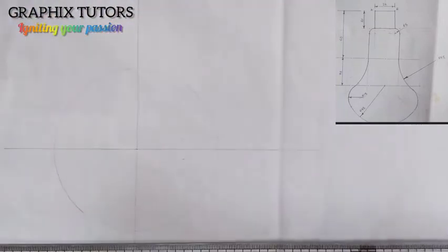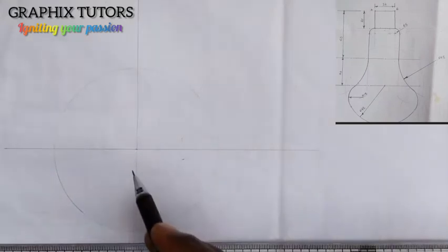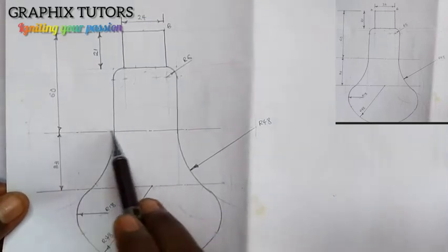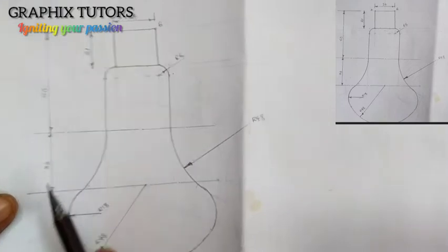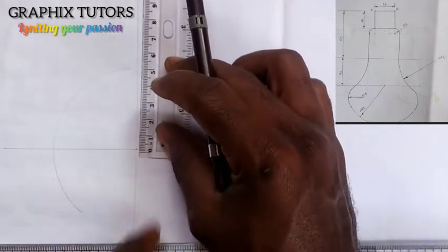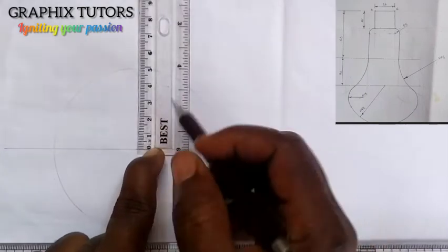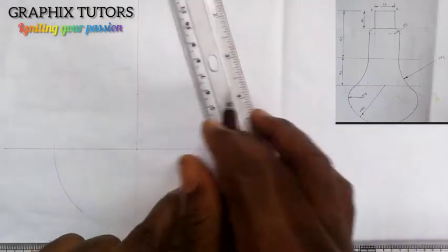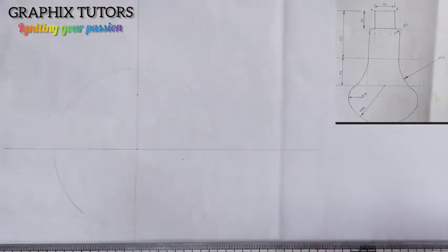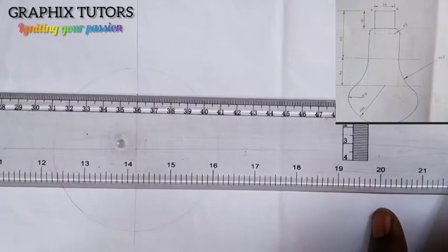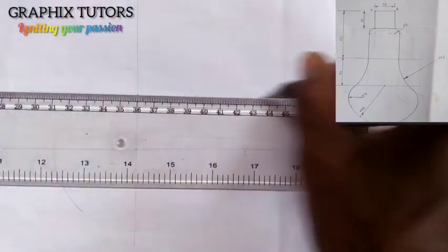Now this center here — from this center to this line here is 33. So I'm going to measure 33 from the center, starting from zero: 10, 20, 30, 31, 32, 33. That is where we are. I'll use my T-square and draw another horizontal faint line.